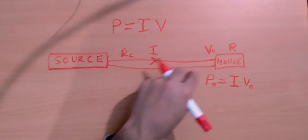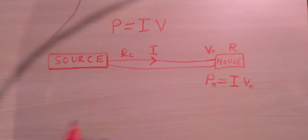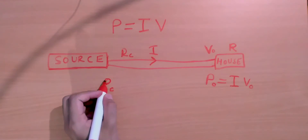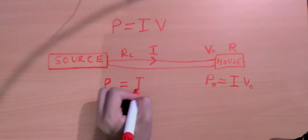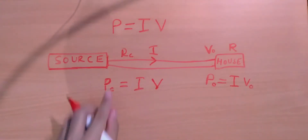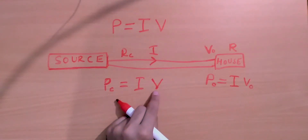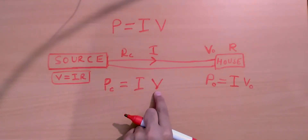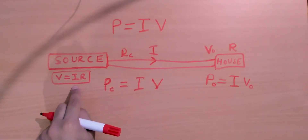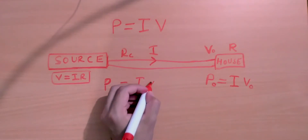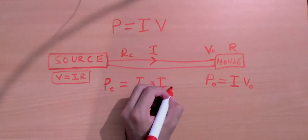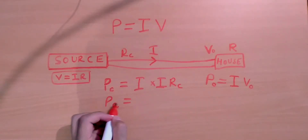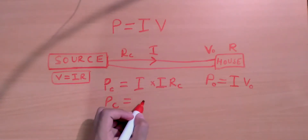To find the power loss at the connecting wires — let's call that Pc — we use P = IV, so Pc equals the current through the wire times the potential drop across the wires. We don't know that potential drop, so using Ohm's law (V = IR), we substitute to get Pc = I × (I × Rc), which gives us Pc = I² × Rc.